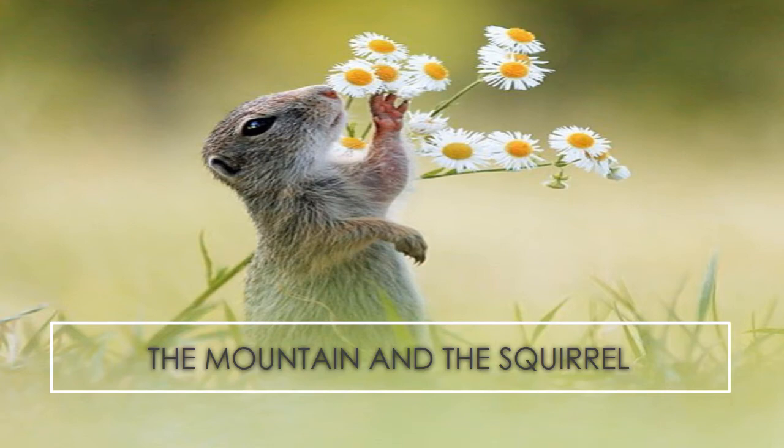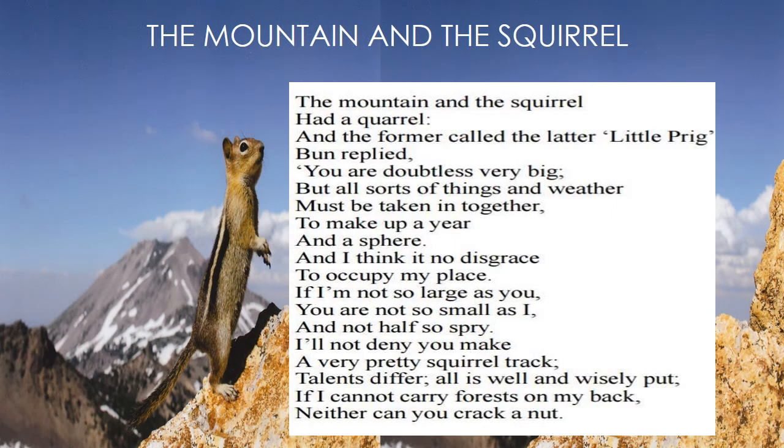The poem is in the form of a conversation taking place between the mountain and the squirrel. The mountain and the squirrel had a quarrel — it is an argument. Listen to it very carefully so that you will come to know how the mountain is talking to the squirrel and how the squirrel is replying back. The poem begins with the speaker describing how a mountain and a squirrel got into an argument.